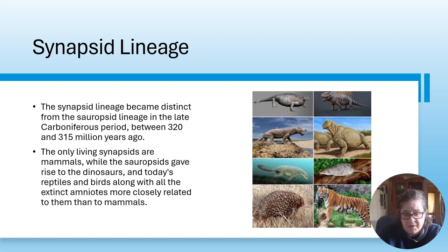The synapsid lineage became distinct from the sauropsid lineage in the late Carboniferous period, between 320 and 315 million years ago. The only living synapsids are mammals, which includes us as well as koalas. While the sauropsids gave rise to the dinosaurs, and today reptiles and birds, along with all extinct amniotes, are more closely related to them than to mammals.